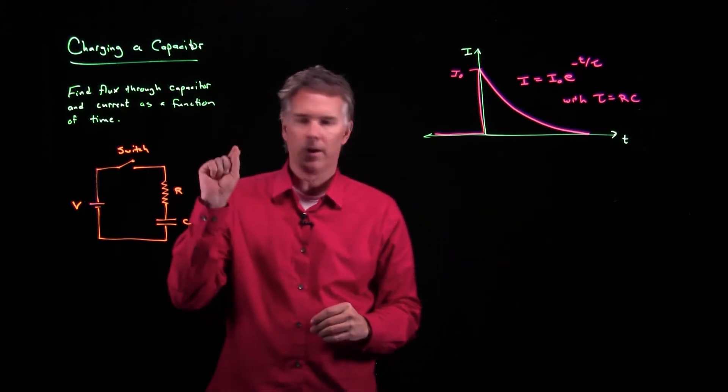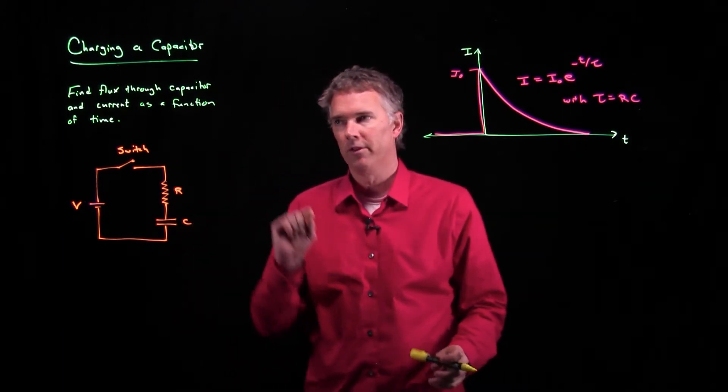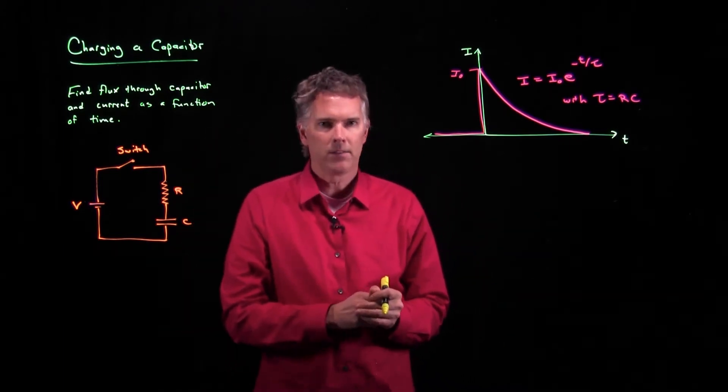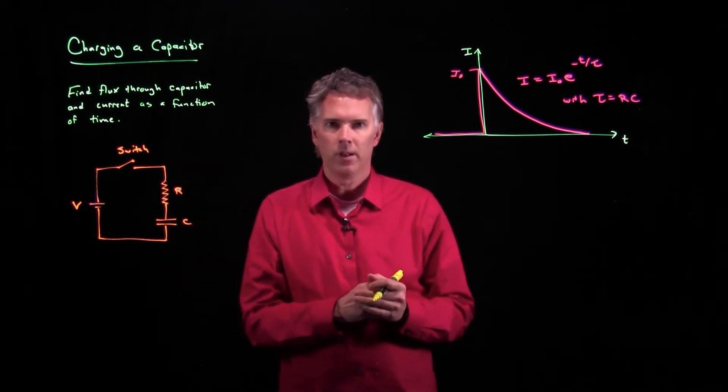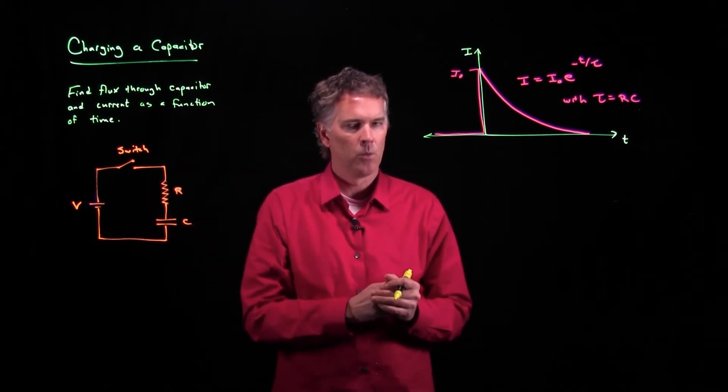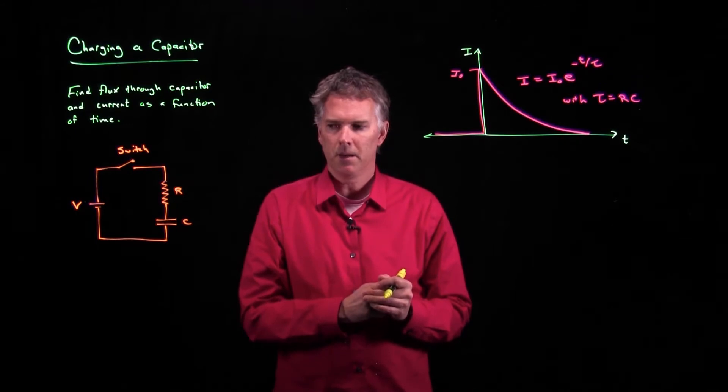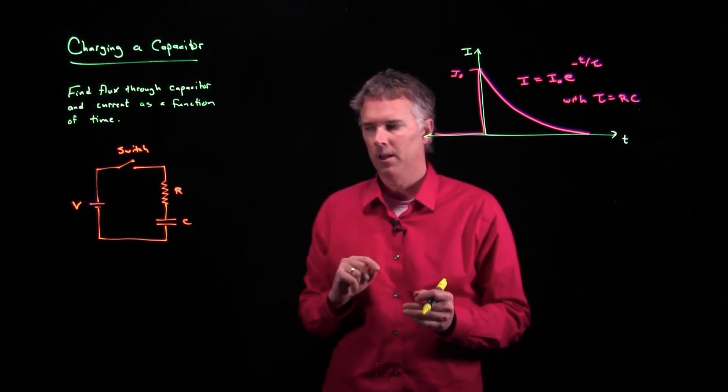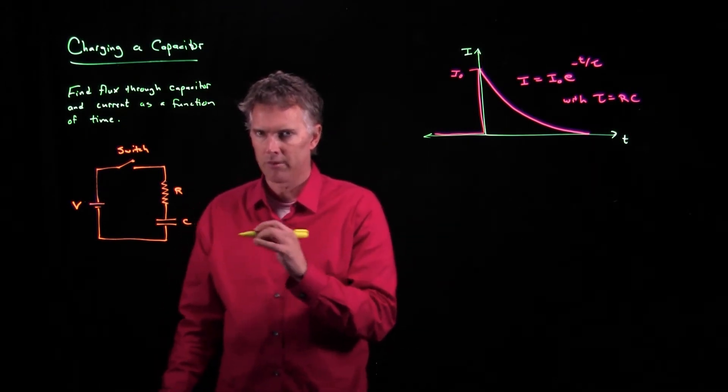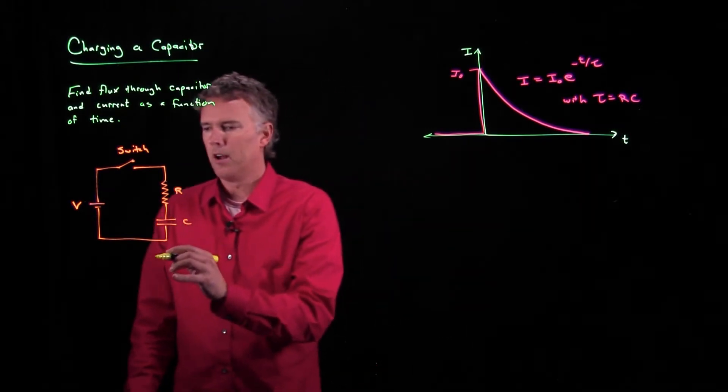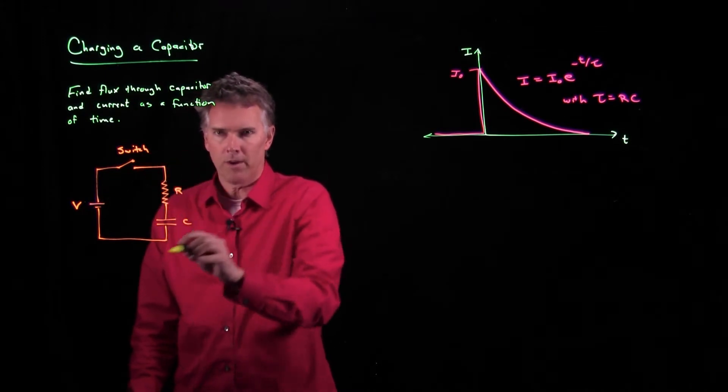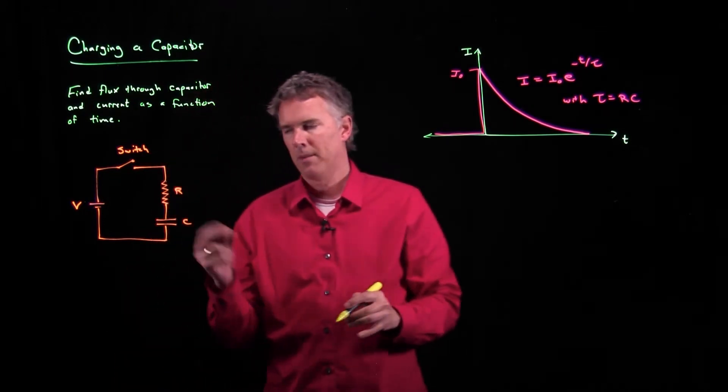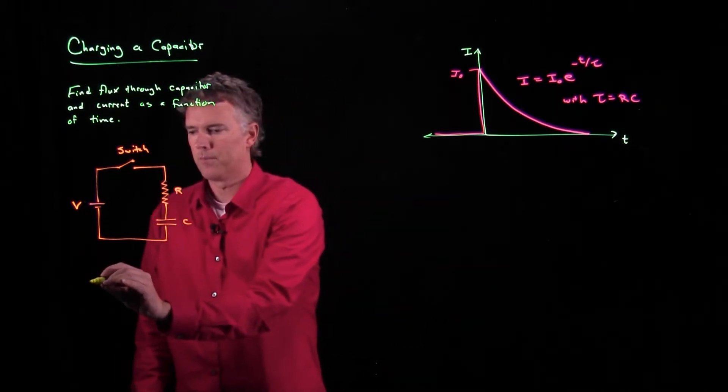So now let's go back to the question. We wanted to figure out what the electric field flux is inside this capacitor. Well, to think about that, we need to do two things. One, we got to understand the circuit here, and if we go back to Kirchhoff's laws, Kirchhoff's laws says if I go once around the circuit, all the voltage drops have to add up to zero.